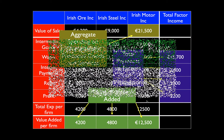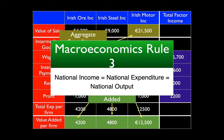Something very important: you can calculate national income three ways. National expenditure on final goods equals the national income earned from producing all of those goods, and that equals the value of national output. Therefore, if you increase one of them, the others mathematically have to increase as well.